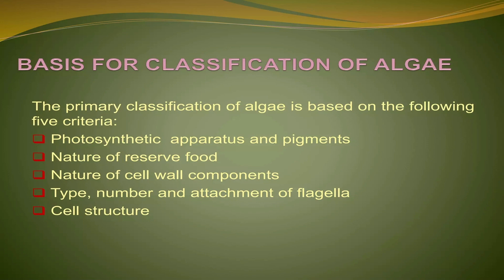Next we are going to the important features of algae. First, algae are primitive aquatic plants. They may be unicellular or multicellular, and root, stem, and leaves are absent. All algae are photosynthetic and they may be prokaryotic or eukaryotic. Starch is the common reserve food of algae.